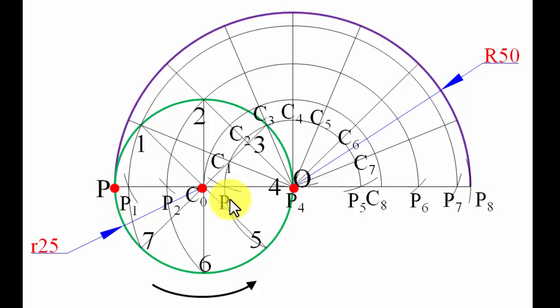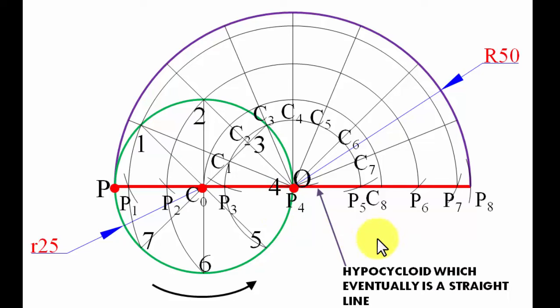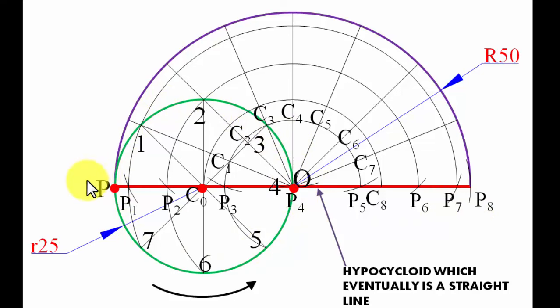When you join all these points, the hypocycloid turns out to be a straight line. The conclusion is: when the directing circle has a diameter double that of the rolling circle, the hypocycloid does not form a curve — it is a straight line. That is the overall conclusion from this problem.